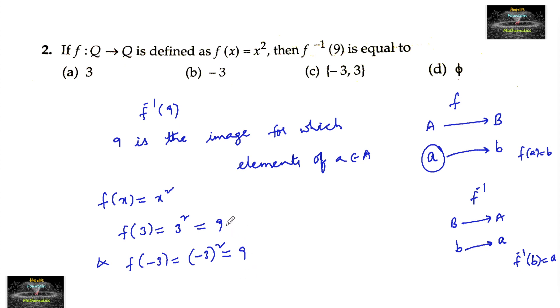Both are having the same image, so we can consider the images as f⁻¹(9) equals... f⁻¹(9) = ±3, that is {-3, 3}.